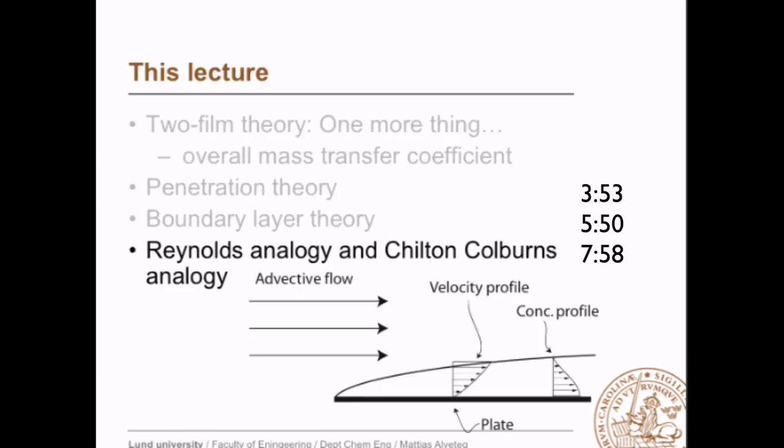In the three theories we have talked about so far — the two-film theory, the penetration theory, and the boundary layer theory — we can find a relation between the diffusivity and the mass transfer coefficient. In Reynolds' analogy and Chilton-Coburn's analogy, we have a slightly different situation. These analogies tell us nothing about the relation between diffusivity and the mass transfer coefficient. Rather, they relate the mass transfer coefficient to the momentum transfer coefficient.